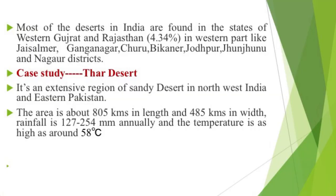Most deserts in India are found in western Gujarat and Rajasthan, accounting for about 4.34% of the area. Specific districts in western Rajasthan include Jaisalmer, Ganganagar, Churu, Bikaner, Jodhpur, Jhunjhunu and Nagaur district.